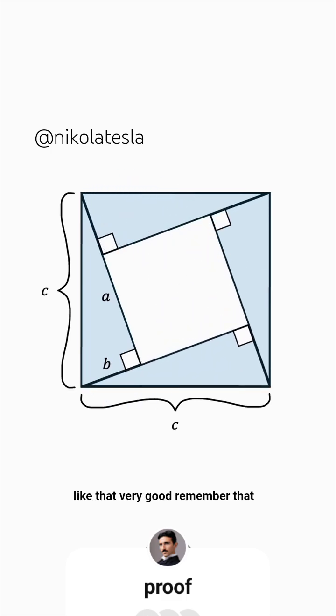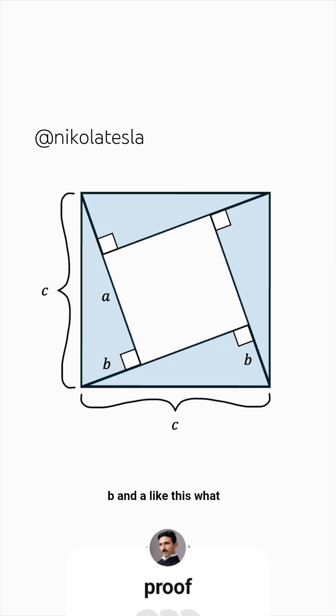Remember that all triangles are identical. So, for example, the lower triangle has legs B and A. What we've done with this arrangement is create this inner square over here.